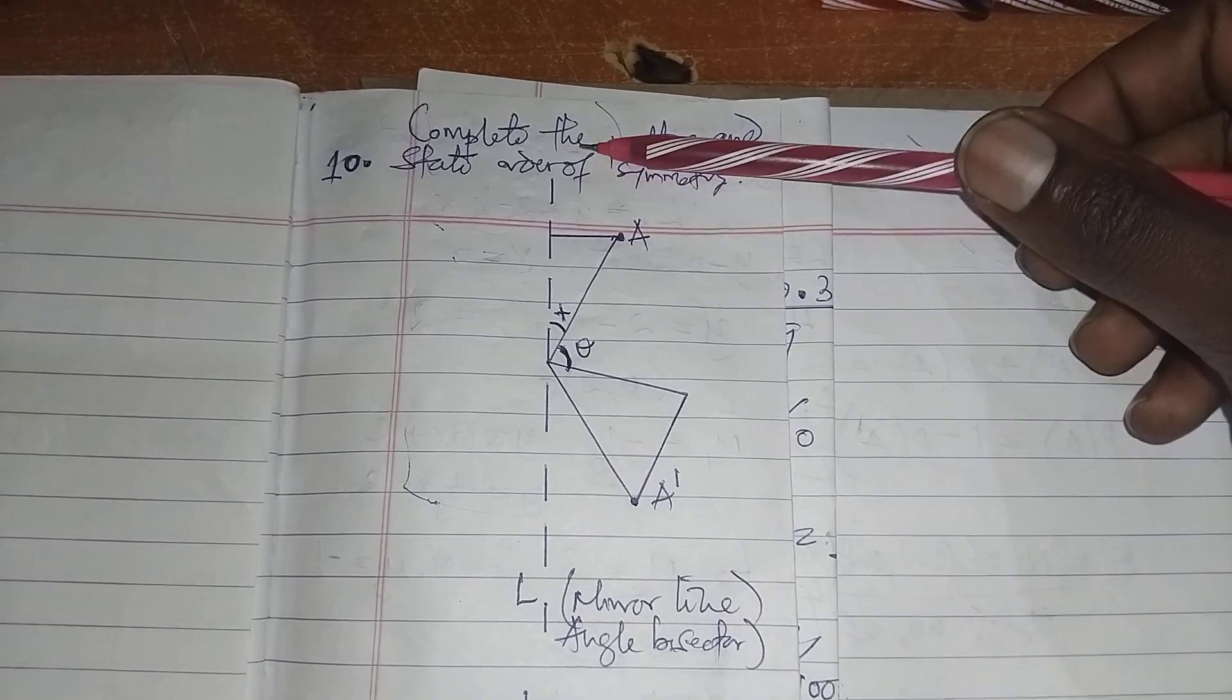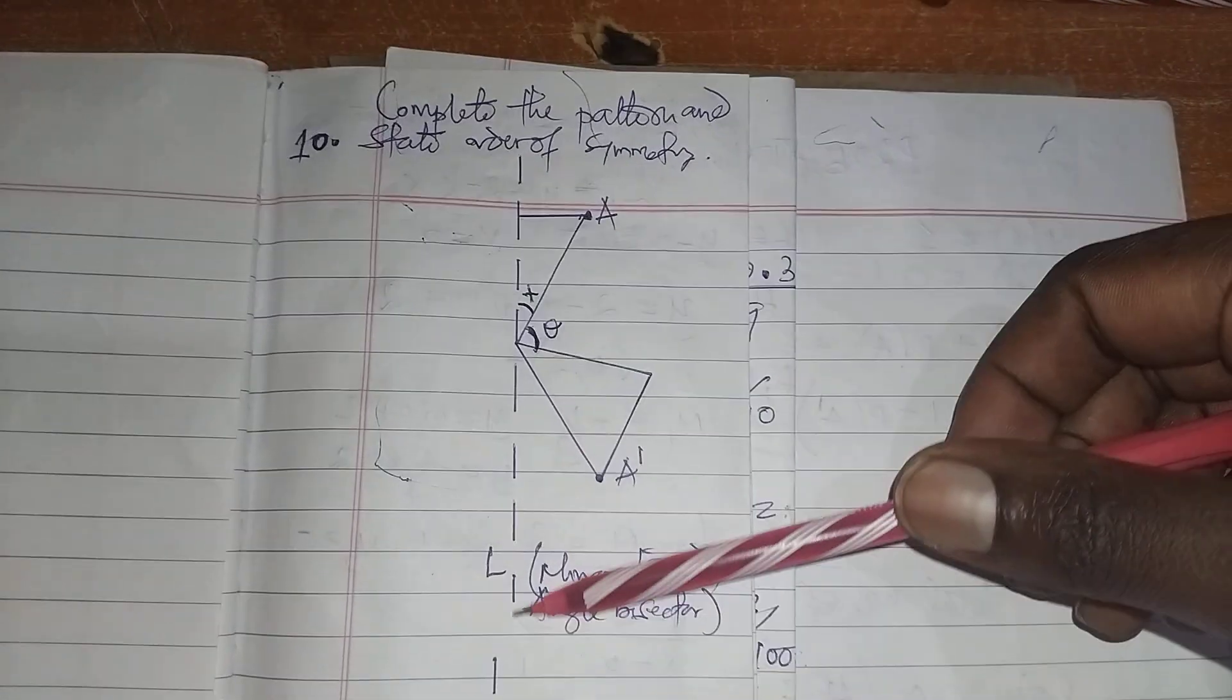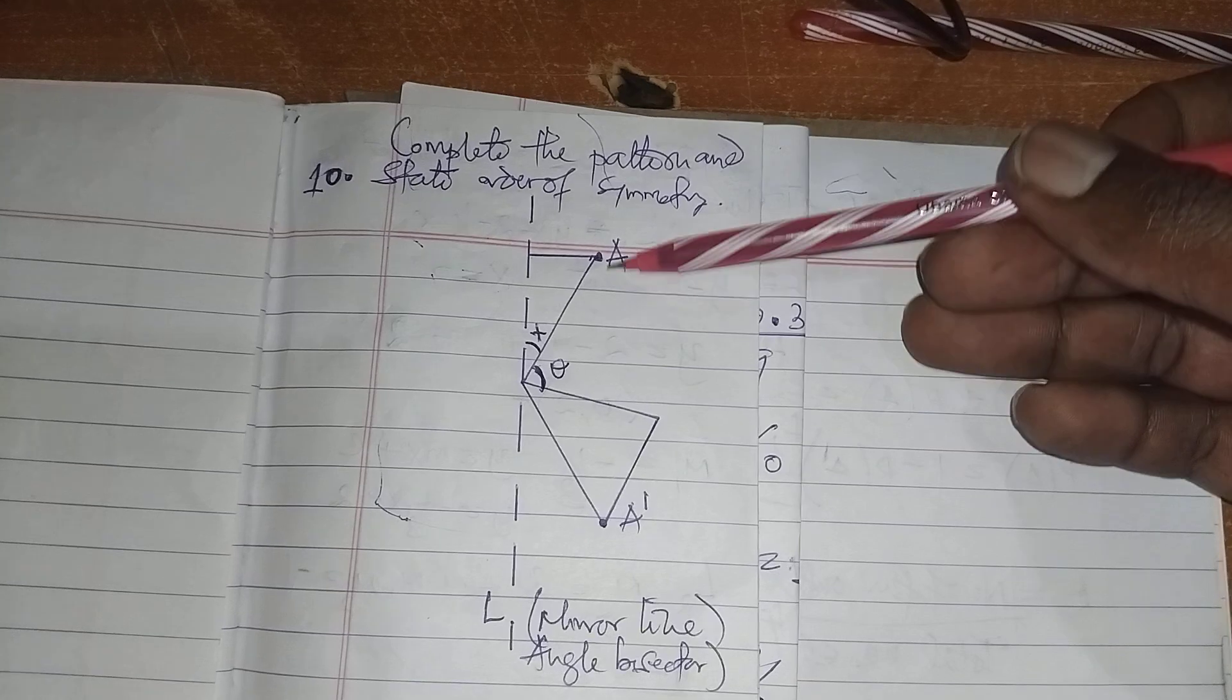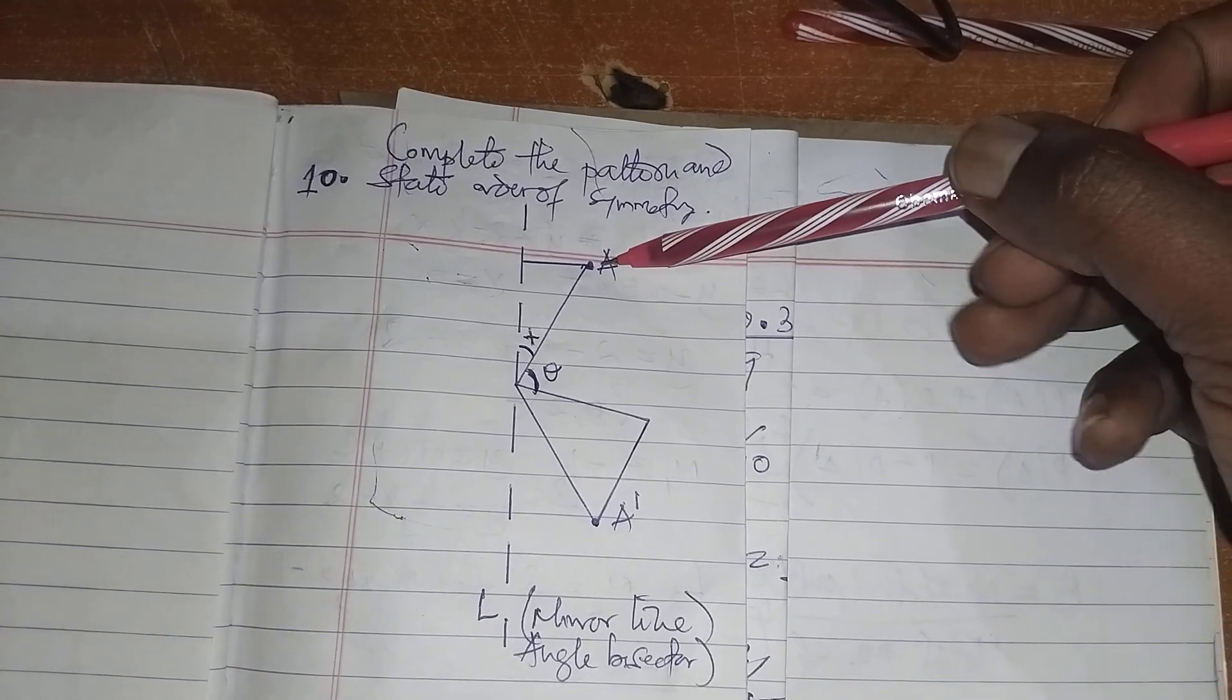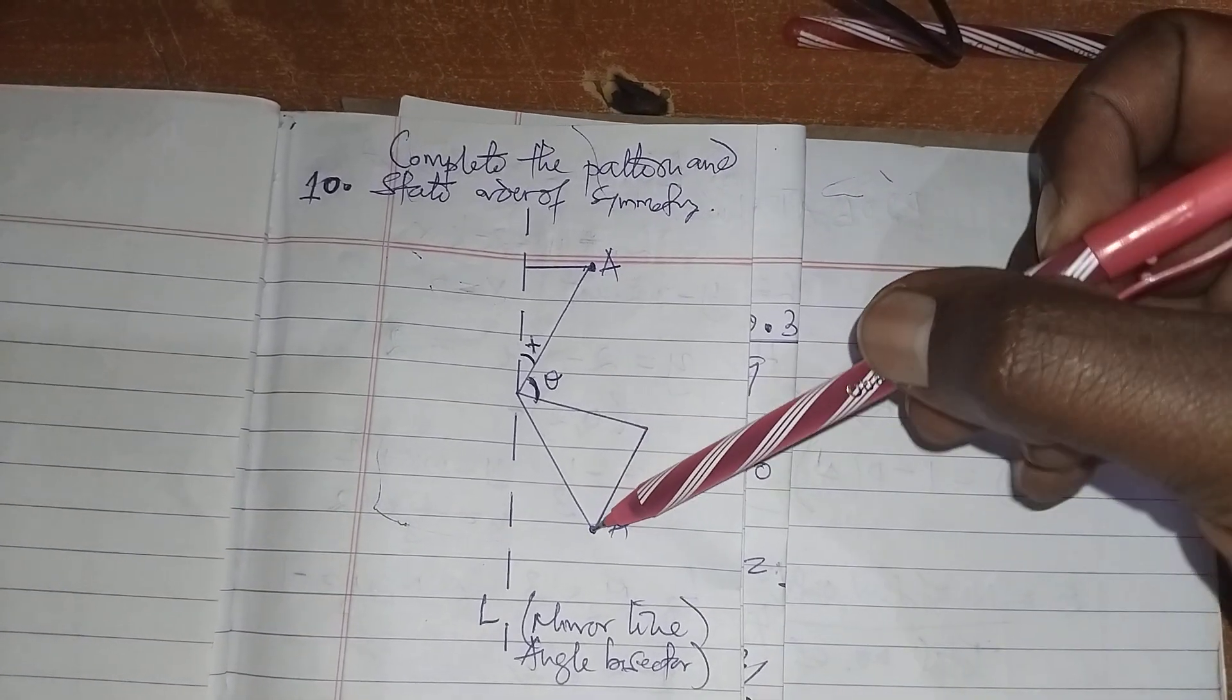Given this diagram, given the line of symmetry or the mirror line, then you have this diagram. This point and this point are the corresponding points.